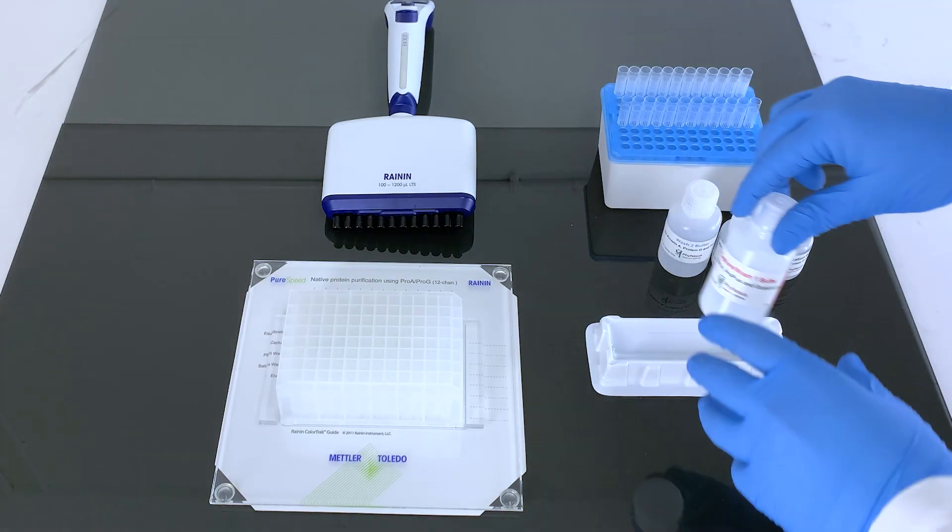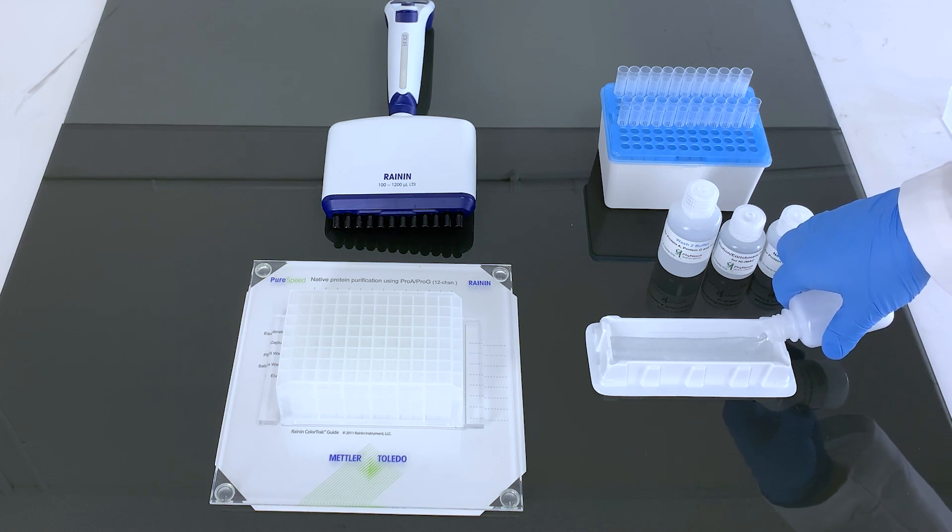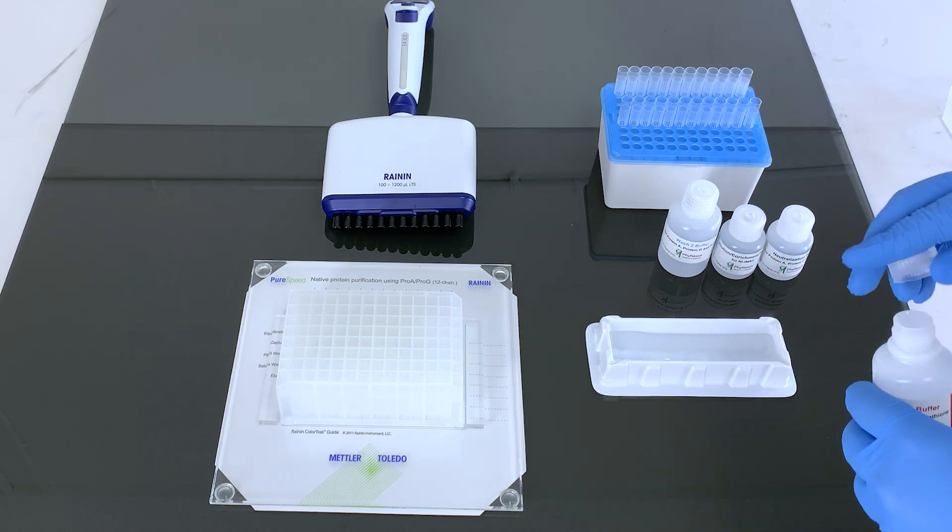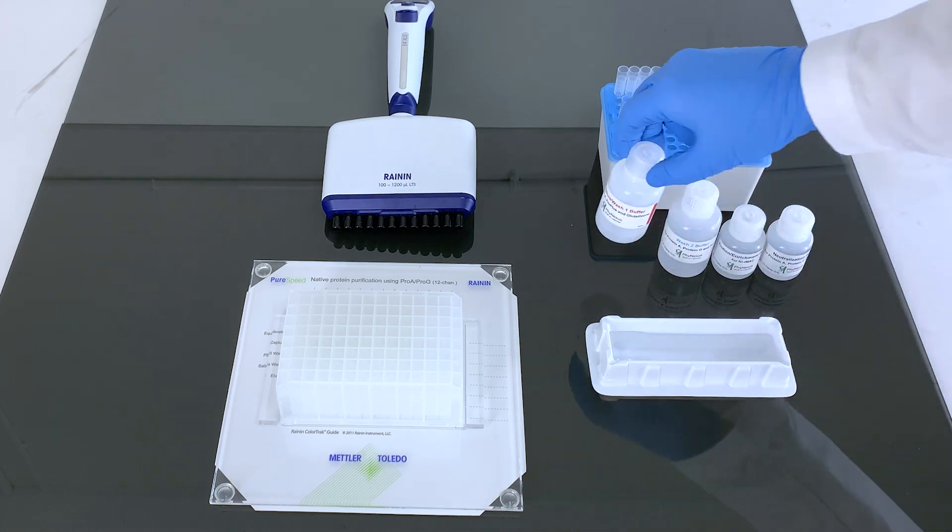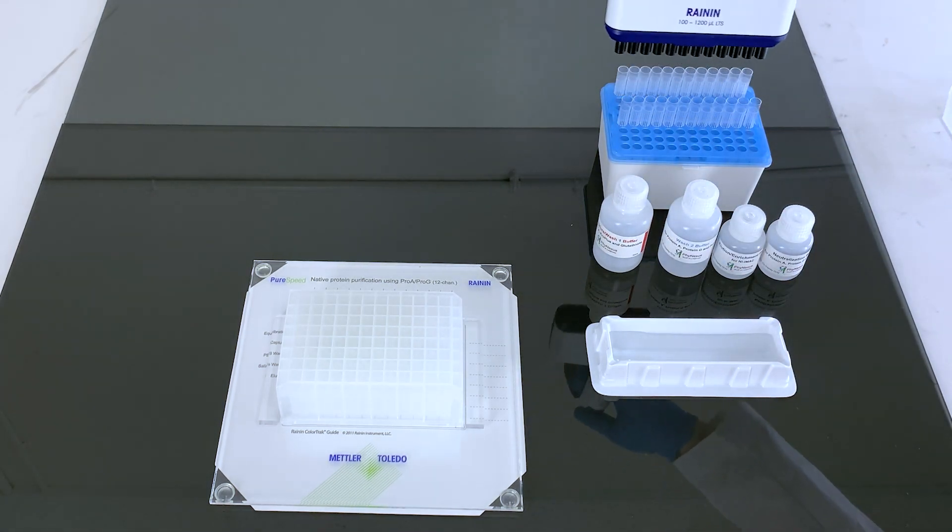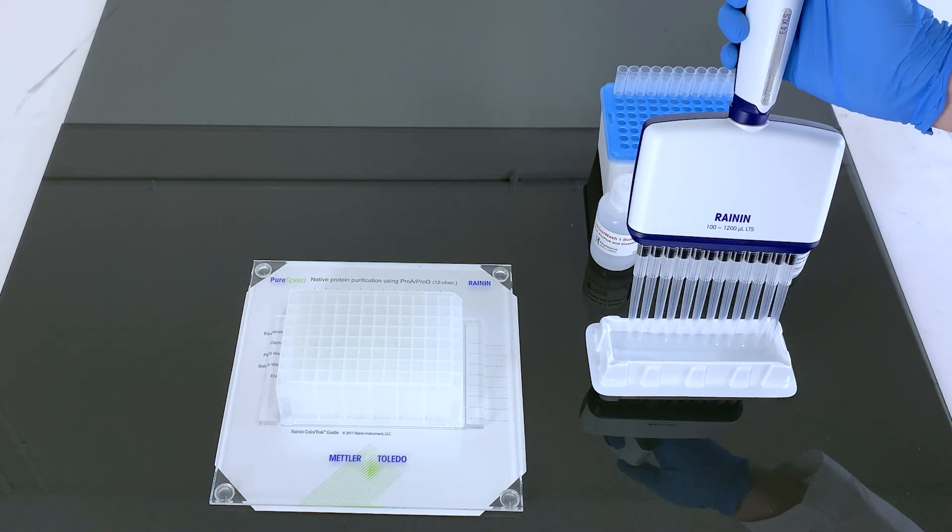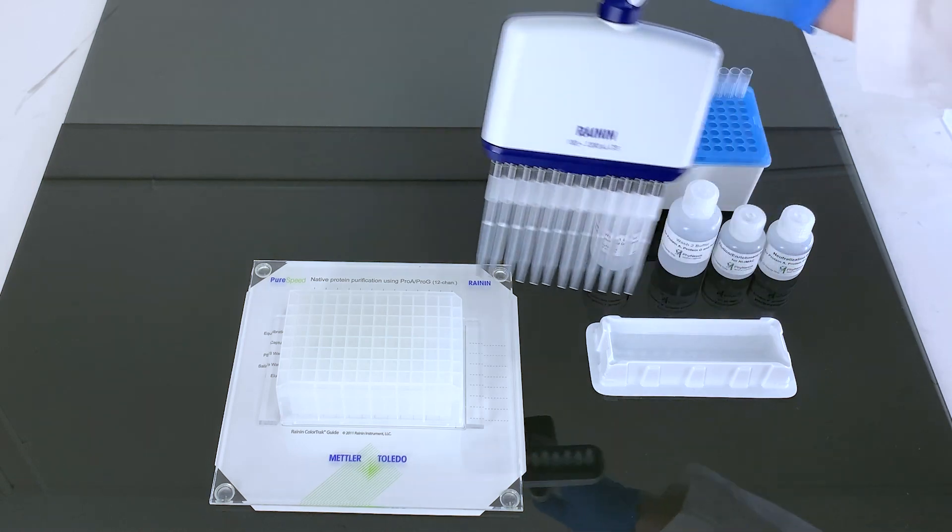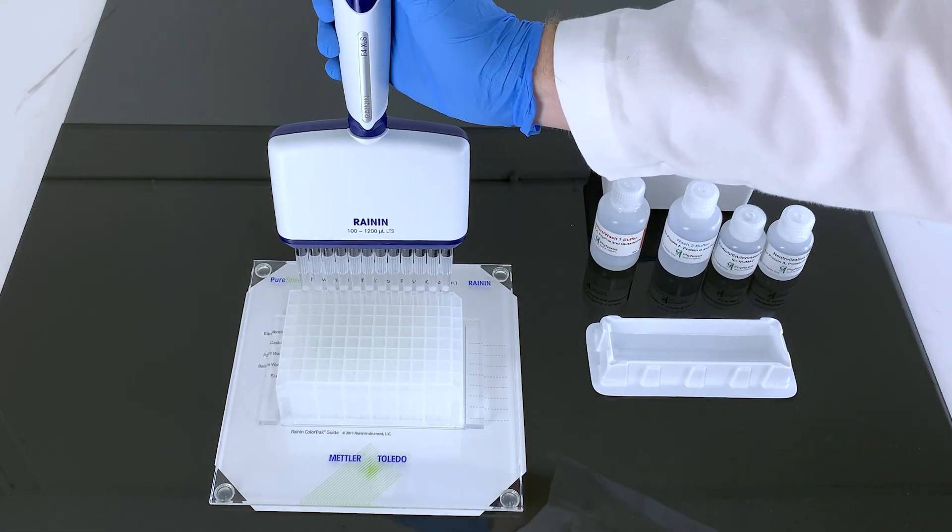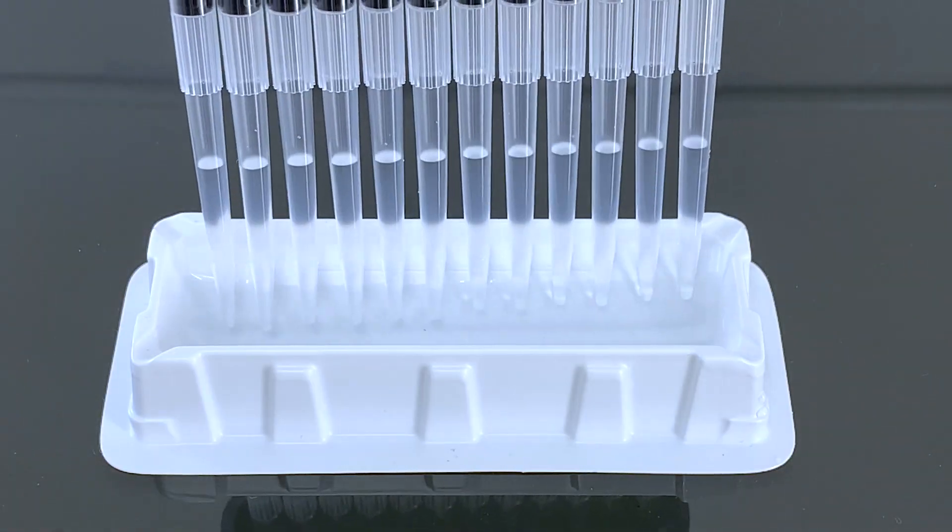Prepare the included FineXS buffers for your prep. For Pro-A and Pro-G, a neutralization buffer is needed. Add the appropriate buffers to each row. See the manual for the needed buffer volumes. Continue preparing and aliquoting buffers to the other rows.